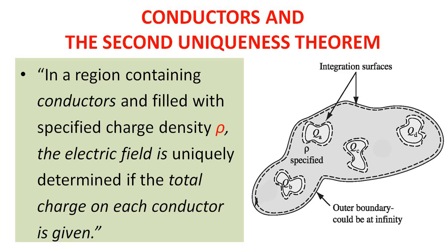Conductors and second uniqueness theorem. The second uniqueness theorem states that in a region containing conductors and filled with a specified charge density rho, the electric field is uniquely determined if the total charge on each conductor is given. The outer boundary is taken at infinity.